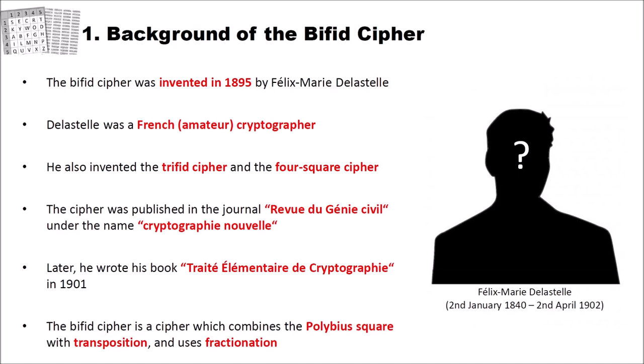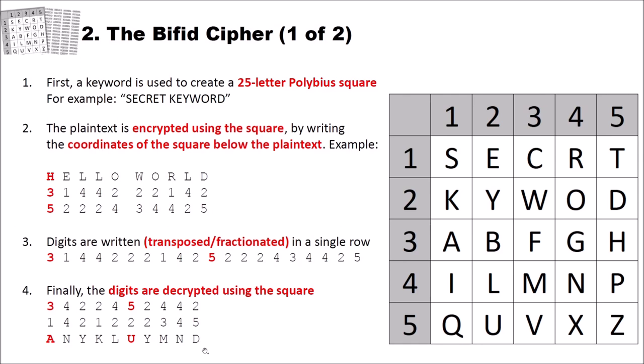How does the bifid cipher actually work? First, a keyword is used to create a 25-letter Polybius square, and I have an example here. For example, we use as a key, secret keyword here. So you create this Polybius square where we have the coordinates here: 1, 2, 3, 4, 5 and 1, 2, 3, 4, 5.